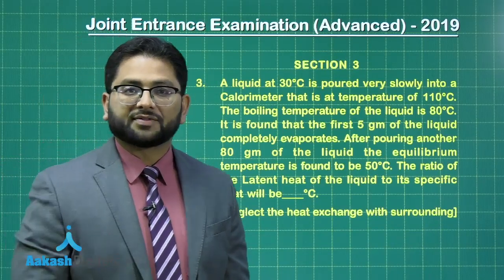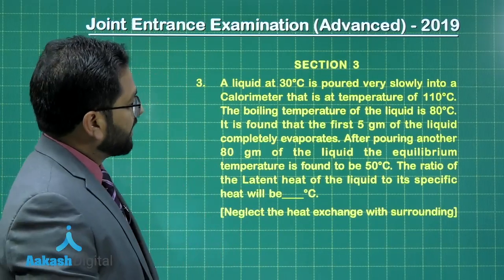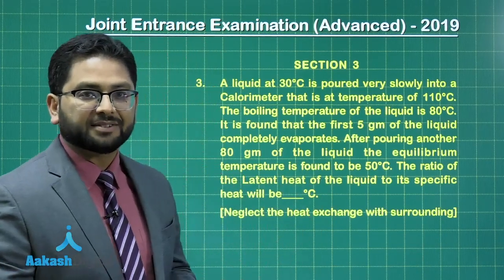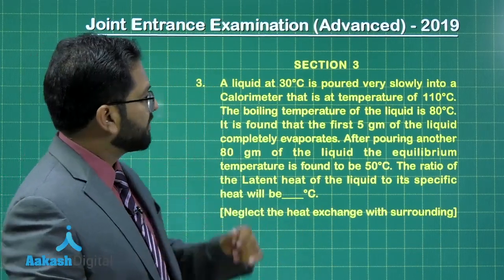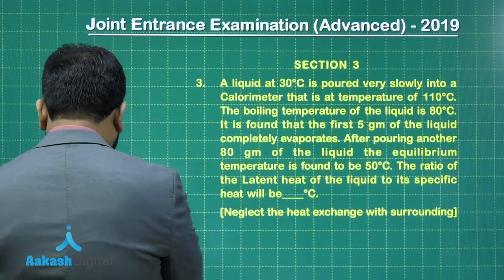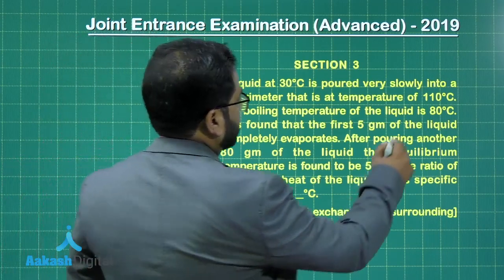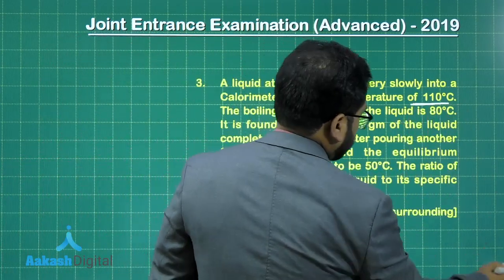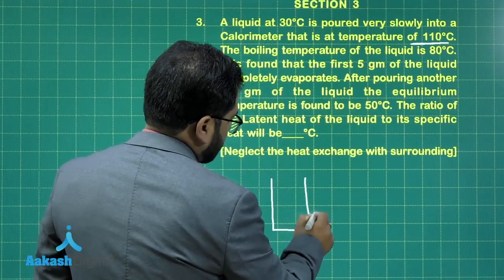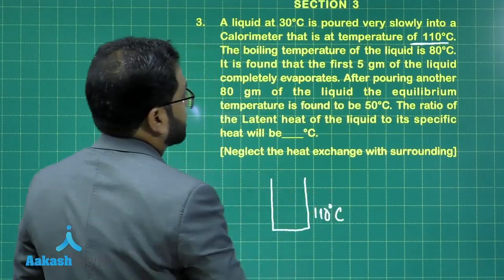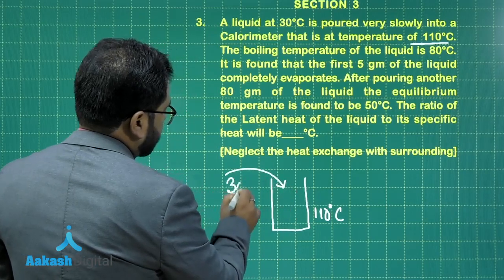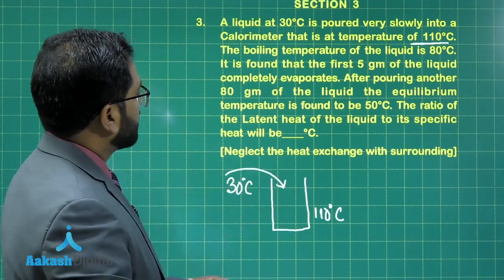Okay, the third question is from calorimetry and the question is almost very straightforward with a small modification. It says that a liquid at 30 degrees centigrade is poured slowly into a calorimeter that is at a temperature of 110 degrees centigrade. So this is the calorimeter, which is at temperature 110 degrees centigrade, and liquid at 30 degrees centigrade is being slowly poured upon the vessel.